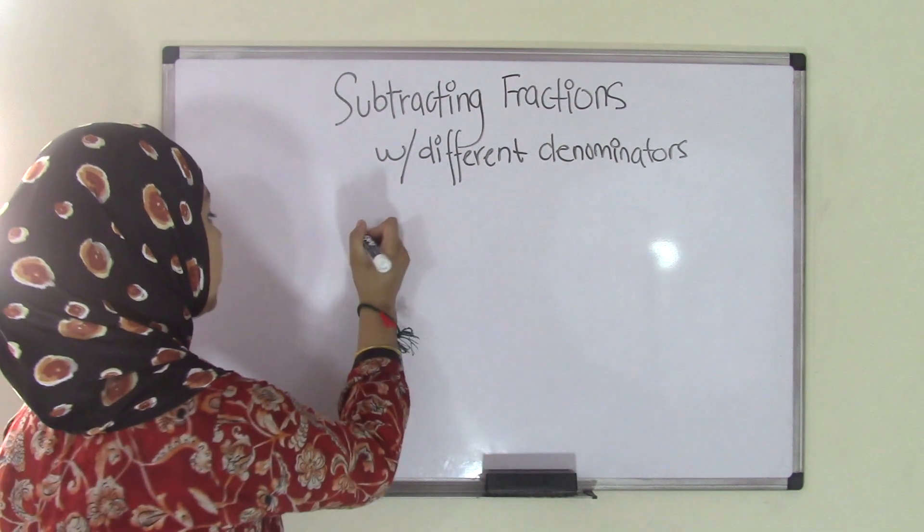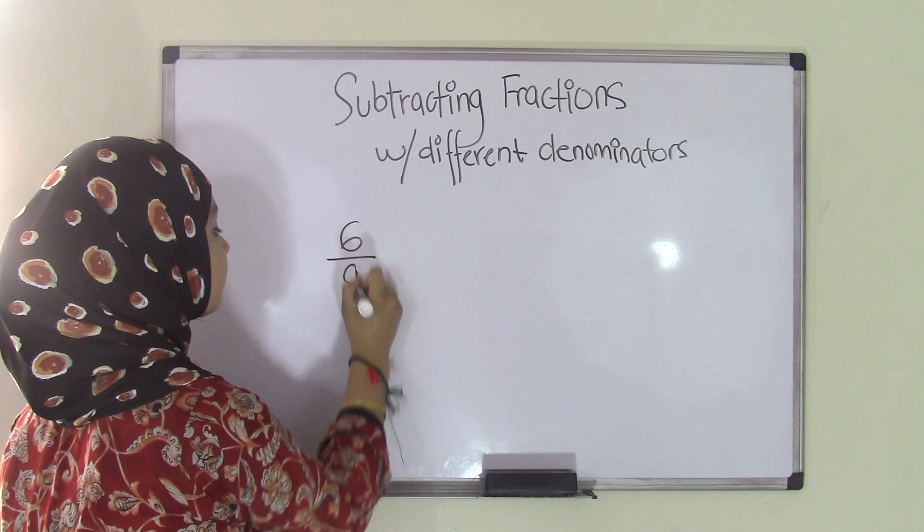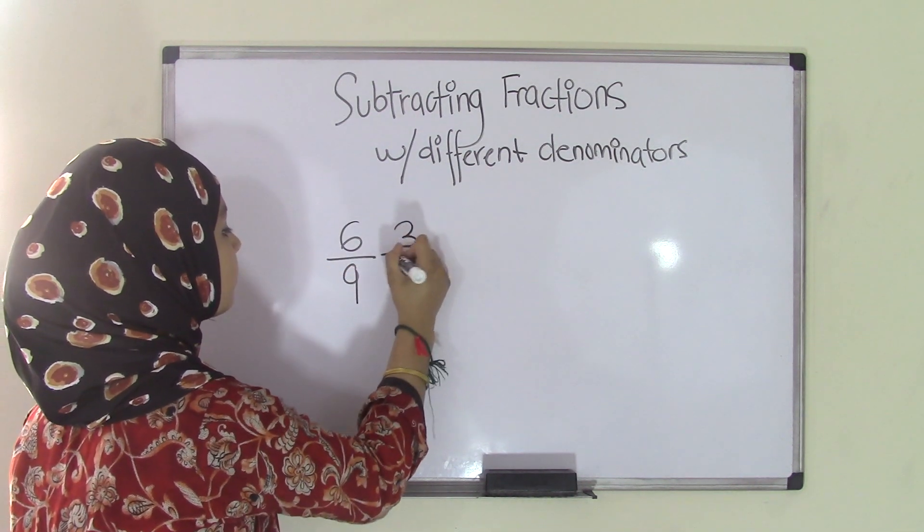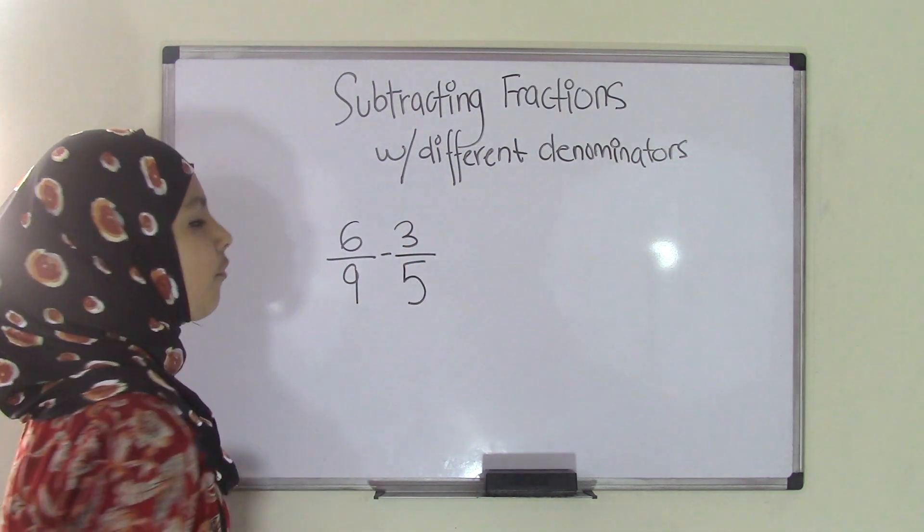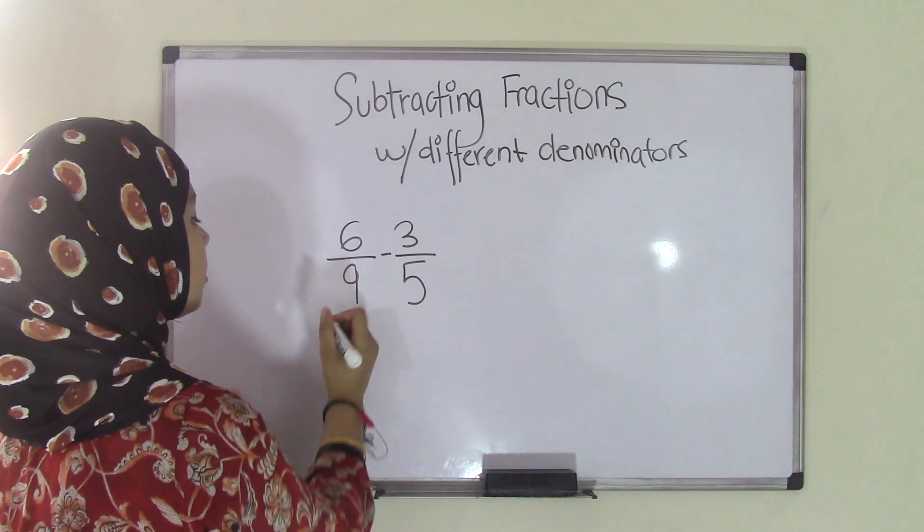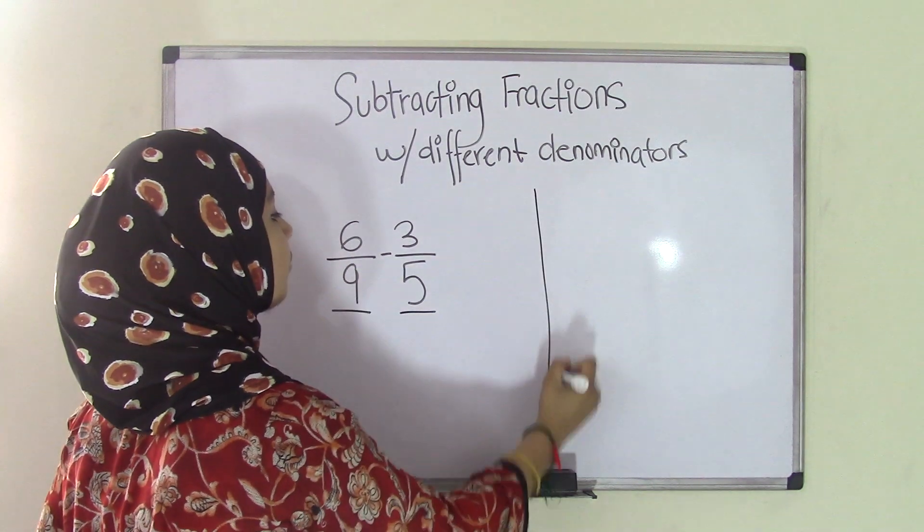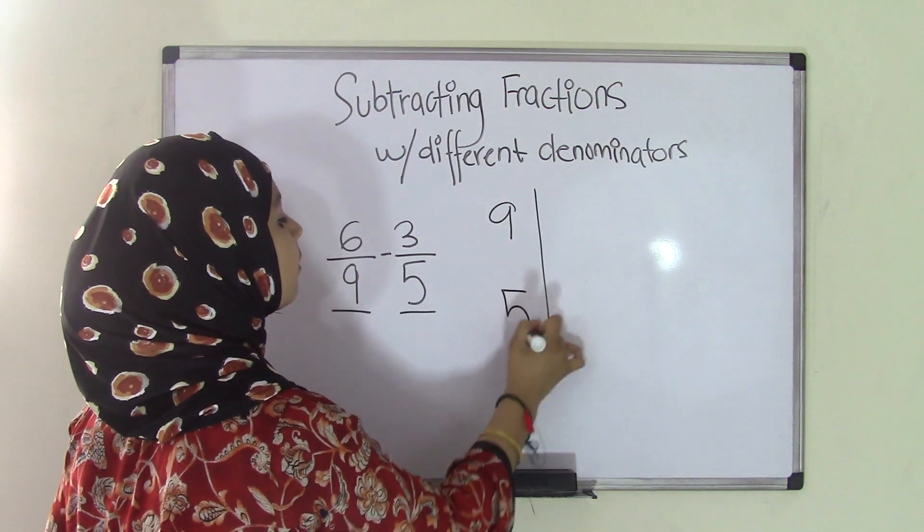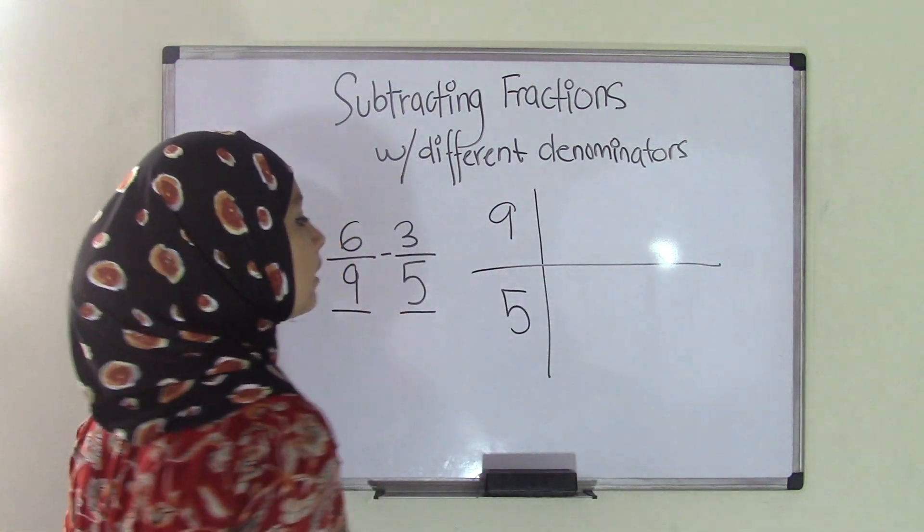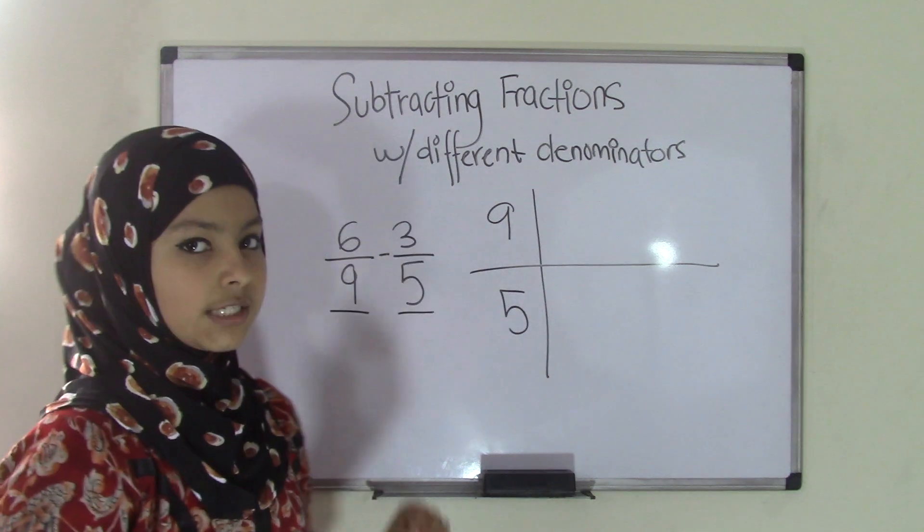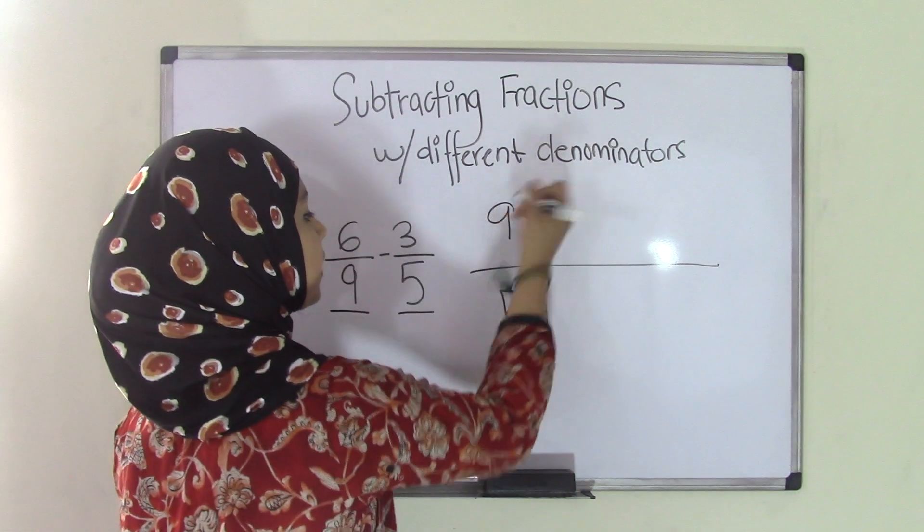So let's say that we have a problem such as 6/9 minus 3/5. Okay, so the first thing that you need to do is you have to look at your denominators, which are 9 and 5, and you're going to go over here and write them. So 9 and 5, like that. And you're going to list the multiples of each until you find a common multiple. So let's start with 9.